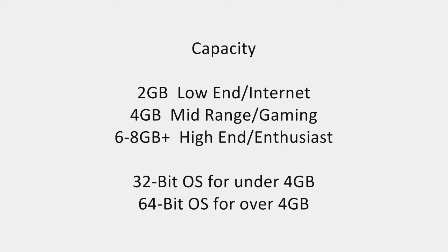Capacity is the amount of memory that you have, measured in gigabytes. This will be different if you're buying a single module or a kit, which is multiple modules. The most common capacity in DDR3 modules today is 1 gigabyte, 2 gigabytes, and 4 gigabytes. If you run a multi-channel kit, this will obviously be multiplied by the number of modules you are running in the kit.